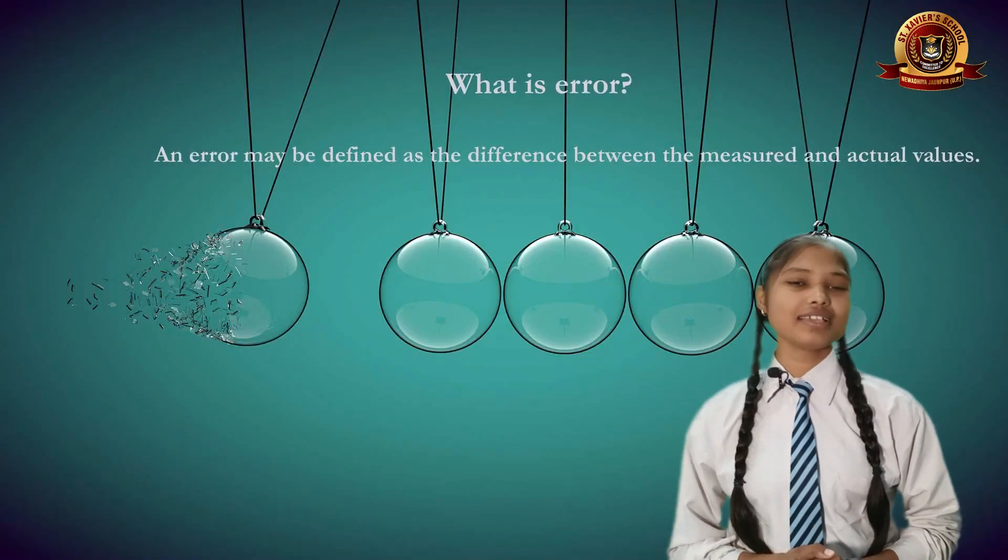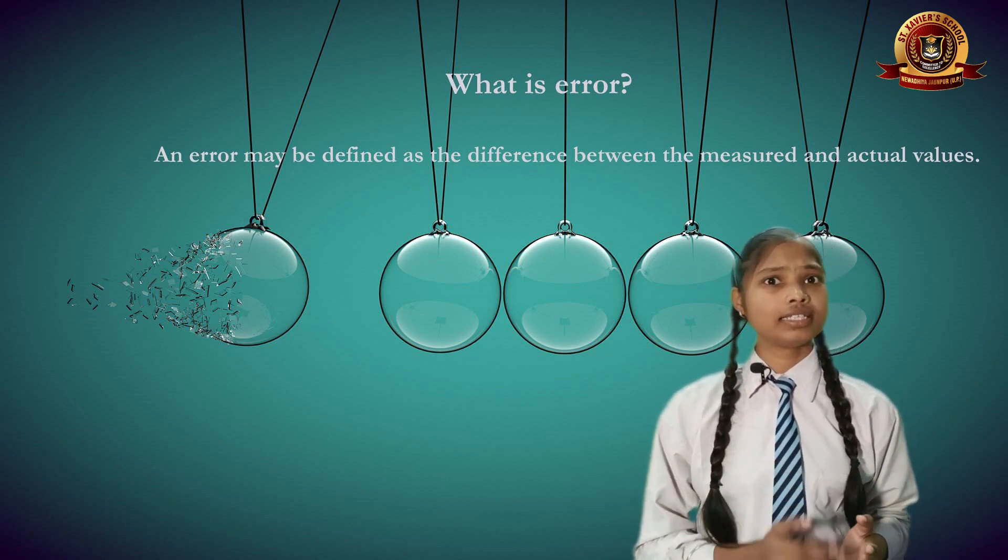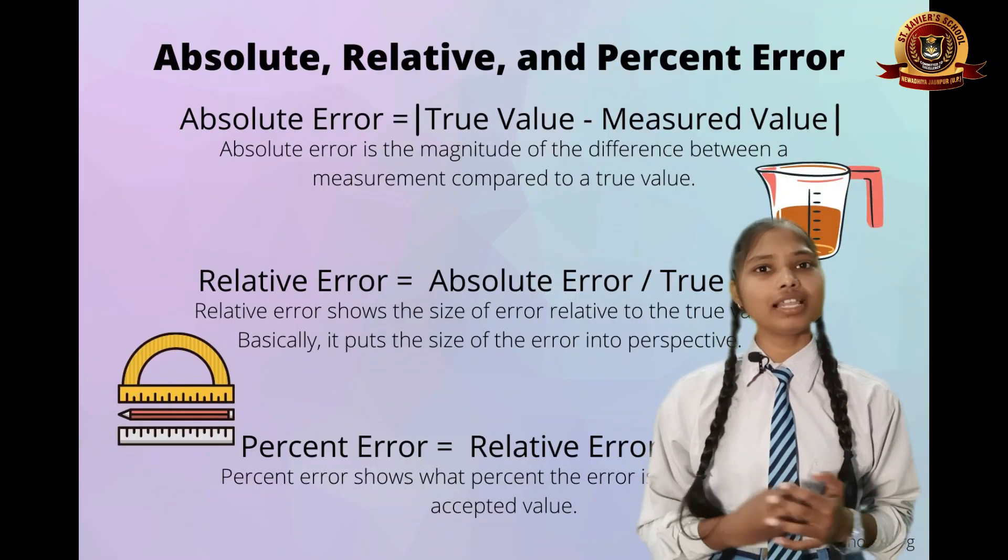Now, the last topic is error. What is error? The difference between the true value and measured value is called error. There are four types of error: absolute error, mean absolute error, percentage error, and relative error.